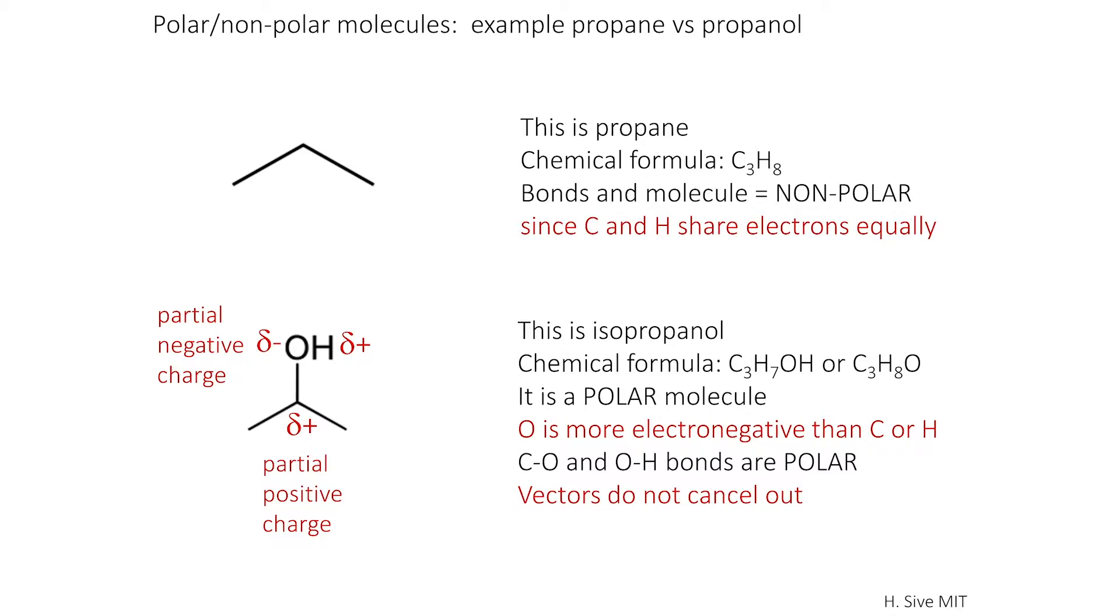It will be pulling electrons away from the carbons and the hydrogens. Therefore, you get a partial negative charge, or a more negative character in the hydroxyl, in the oxygen part of the molecule. And this molecule is polar.